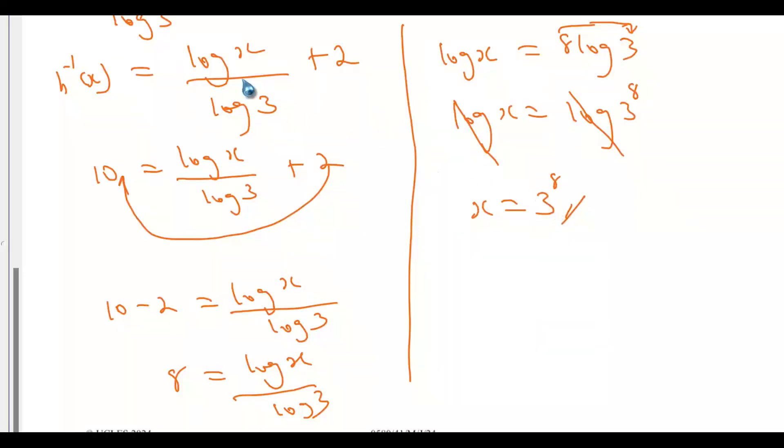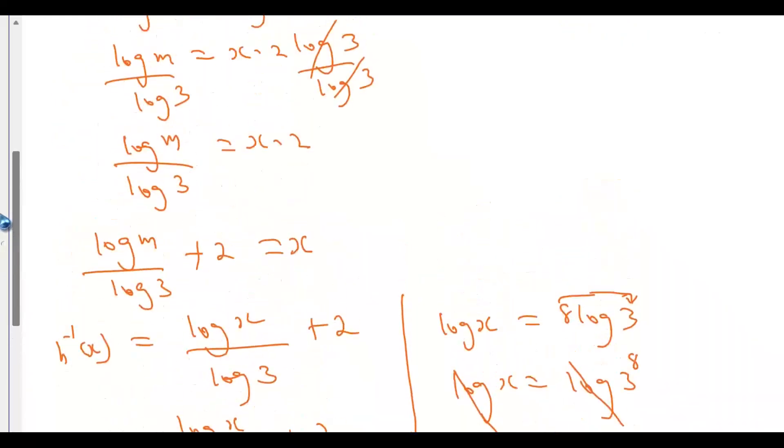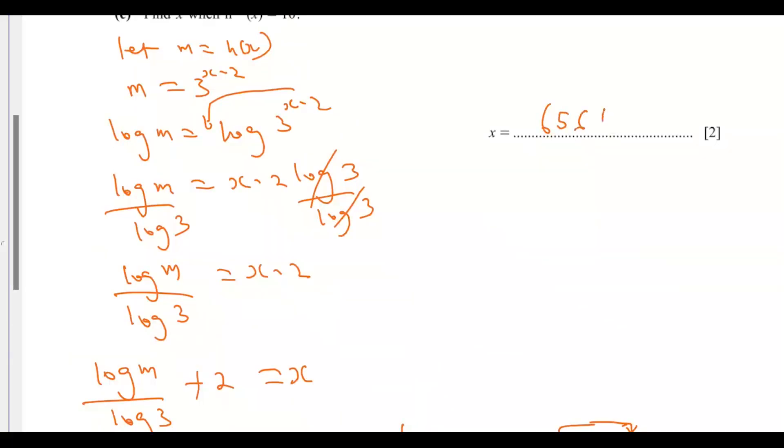Inputting into a calculator, x equals 6561. So that is the value of x. This is the end of my solution to the Cambridge IGCSE Mathematics Paper 4/1 written in May/June 2024. In my next series of videos I'll be solving Paper 4/3. Don't forget to let me know in the comments the most difficult question out of these nine questions.